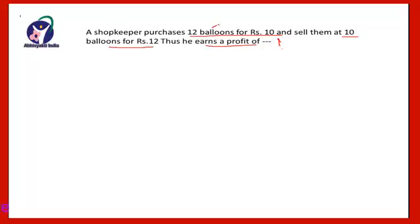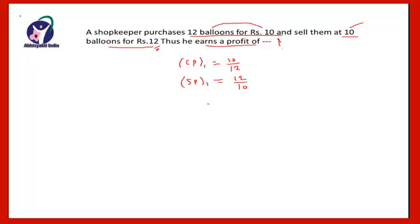He purchases 12 balloons for Rs.10, and therefore the cost price of 1 balloon will be Rs.10/12. He sells 10 balloons for Rs.12, and therefore the selling price of 1 balloon will be Rs.12/10.